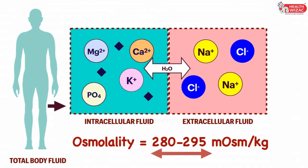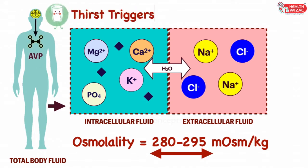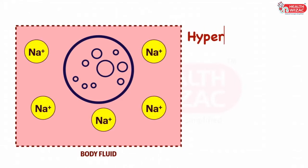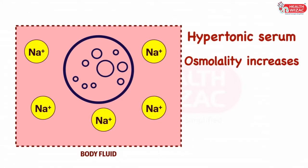A subtle change in the osmolality level triggers the osmoreceptors, thus sensitizing the thirst sensation in the brain along with the release of arginine vasopressin in the blood. Both of these tend to normalize the serum osmolality level. In the clinical condition of hypernatremia, the serum becomes hypertonic and the osmolality increases, resulting in the shift of fluid from the intracellular space into the extracellular space, causing the cells to shrink.